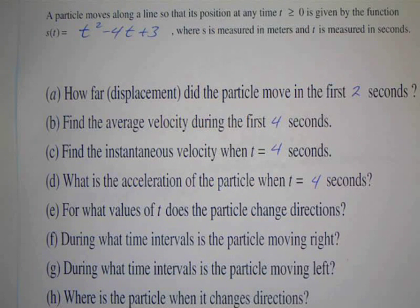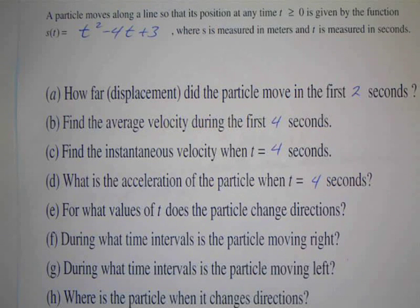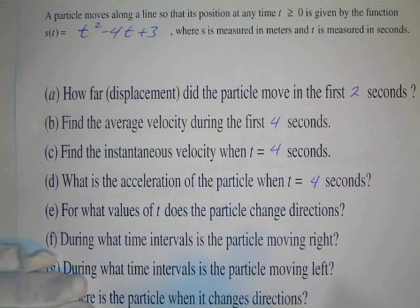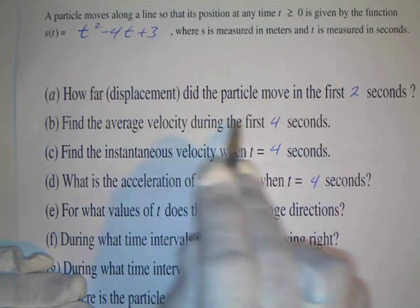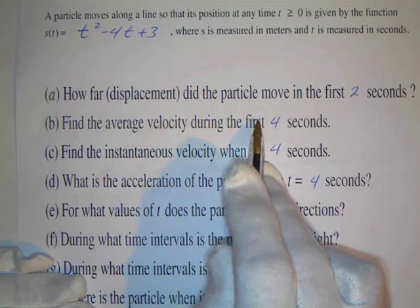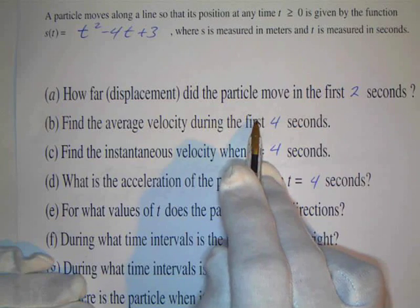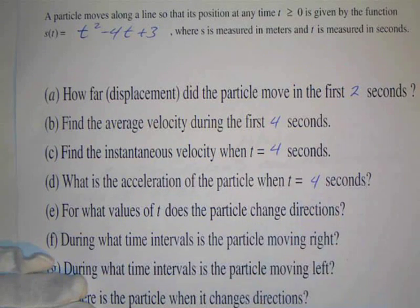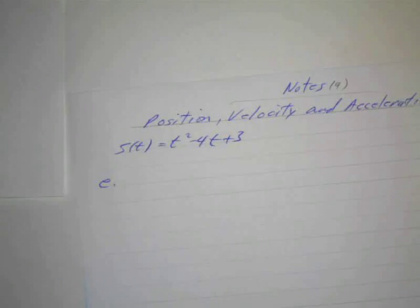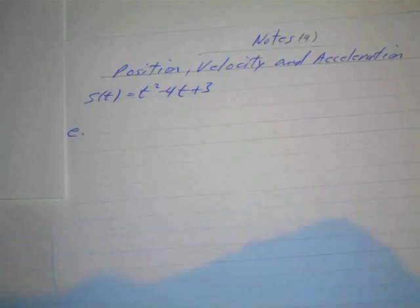Here are some more notes on this particle motion question. We're on letter E: for what values of T does a particle change direction? It has to stop in order to change directions. If my particle is moving to the right and then wants to go to the left, before it can change direction it has to stop. So what happens when it stops? The velocity is zero when it stops. So we want to find out when the velocity is zero.